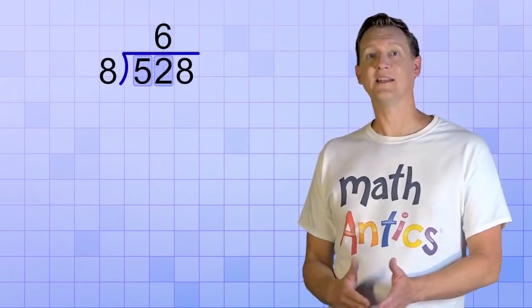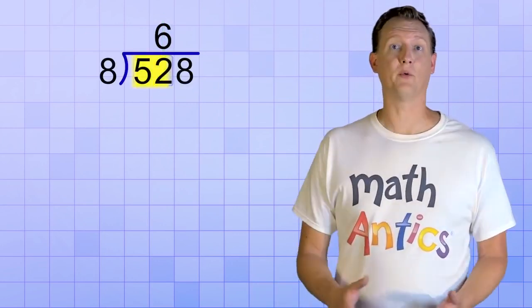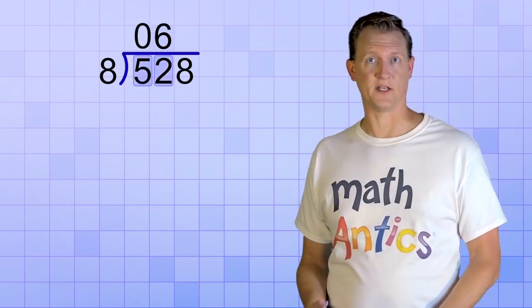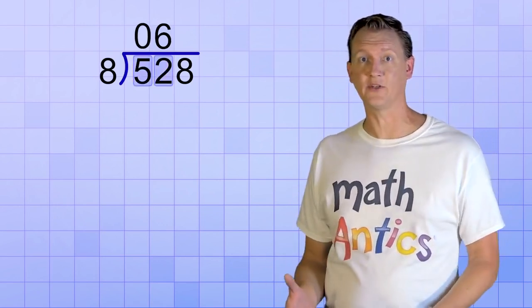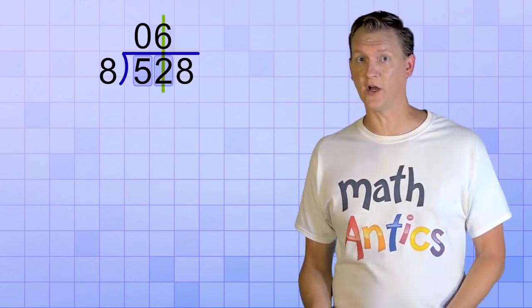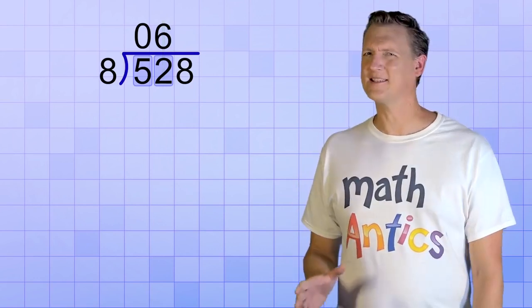Why does it go there? Because we had to skip the first digit and group it with the 2. If we wanted to, we could have put a 0 above that first digit, since the 8 wouldn't divide into it any times. And if that helps you keep track of which answer digit you're on, then that's a good idea. But it's not required.